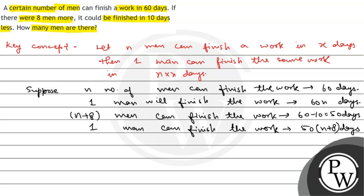Suppose this was equation 1, this was equation 2. So, 1 and 2 gives that 50 into n plus 8 must be equal to 60n. And it implies that 60n is equal to 50n plus 400.